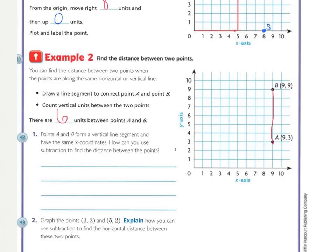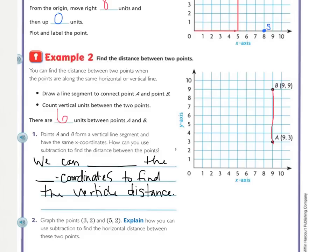Let's look at number 1 with example 2. Points A and B form a vertical line segment and have the same X coordinates. That's the first number. How can you use subtraction to find the distance between these points? Right here, we can see that 9 and 9, the first one, is the same. And then, our Y coordinate has a 9 and a 3. How can we use that Y coordinate to find the distance? My sentence says, we can blank the blank coordinates to find the vertical distance. When you're finding a difference or a distance between something, you are going to be subtracting. And then, which coordinates are we using? I use the word vertical in my sentence because that's the up and down. We're finding the difference between that. So, that is the Y coordinate.